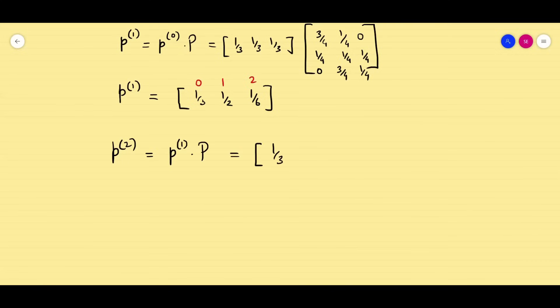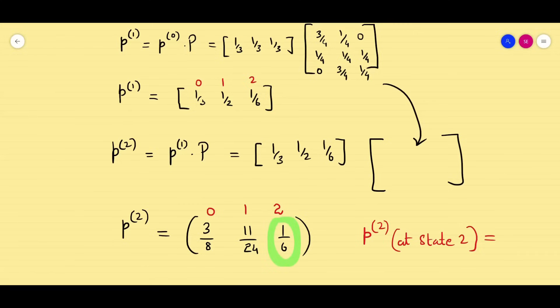Similarly, when you want to compute P2, what you have to do? P2 is nothing but P1 times capital P. So my P1 is [1/3, 1/2, 1/6] and my P2 is going to be [3/8, 11/24, 1/6] for the states 0, 1, and 2. So what they are asking is P2 at state 2. So this is what the required data, and it is very clear the required data is 1/6. So my answer is 1/6. So the first part of the problem gets over.